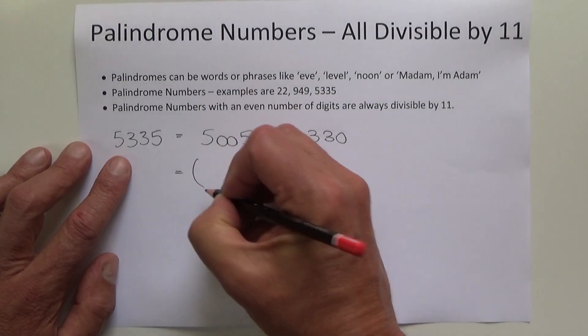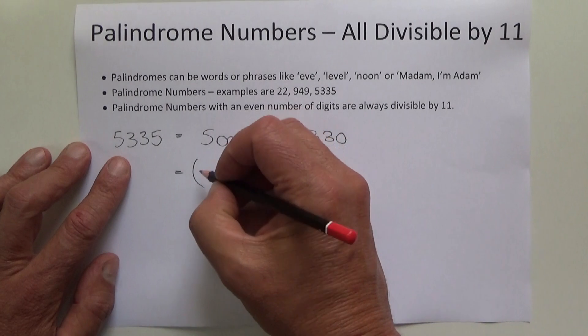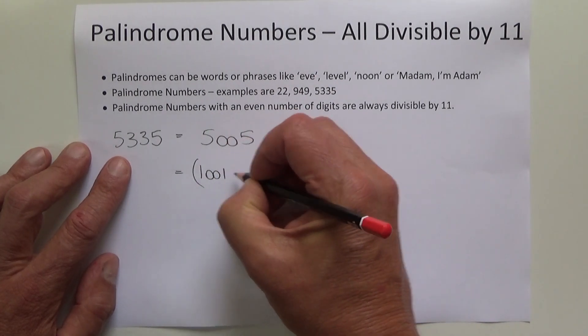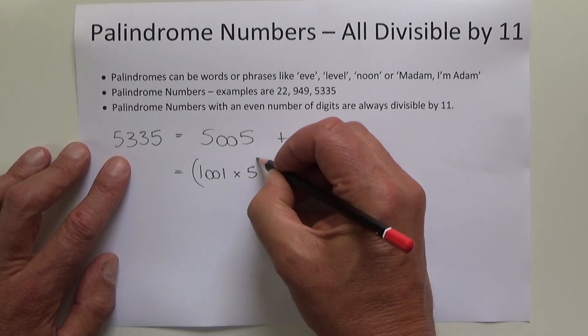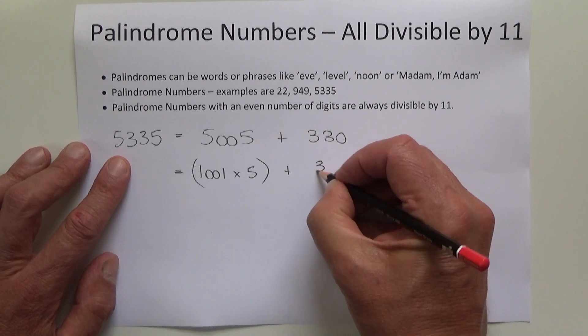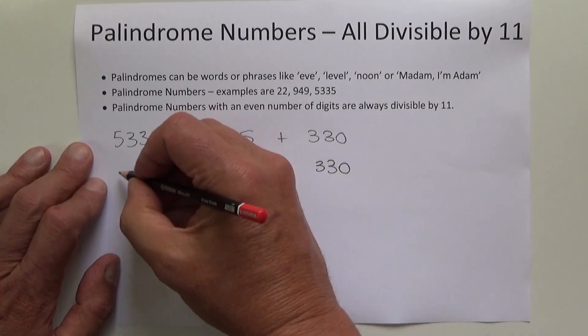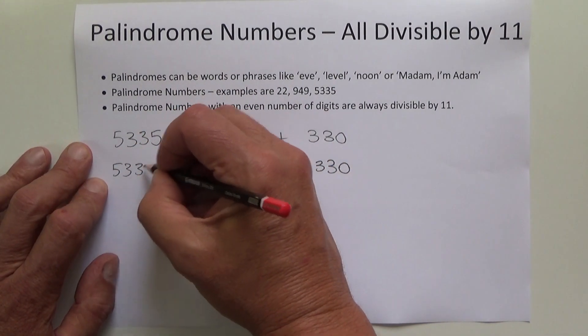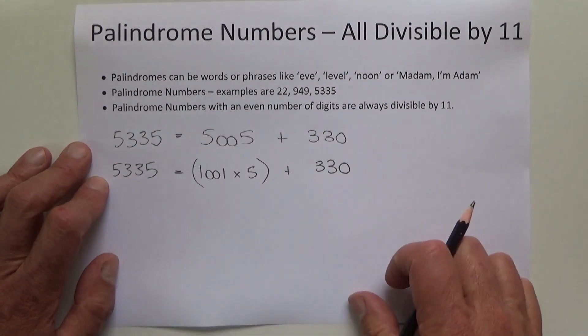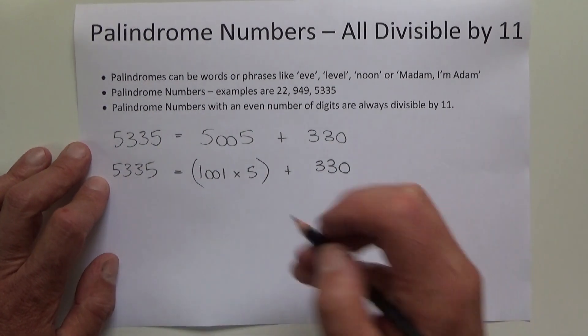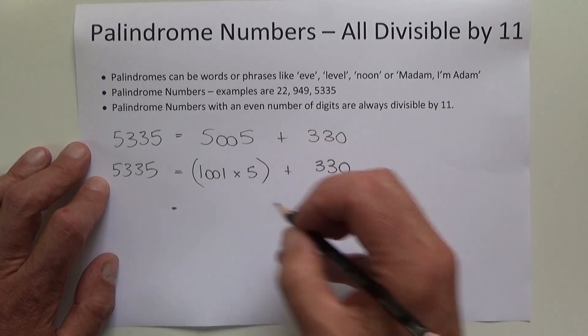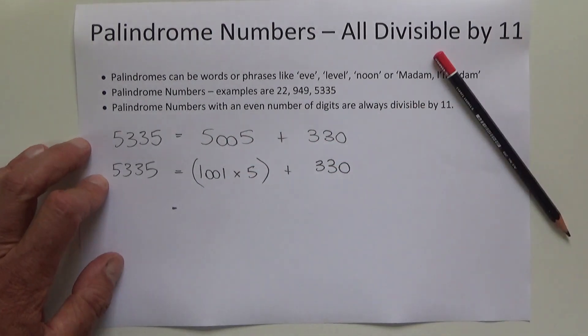If we get the 5005, then that breaks down into 1001 multiplied by 5, and then we add on the 330 as well, still all equaling 5335.